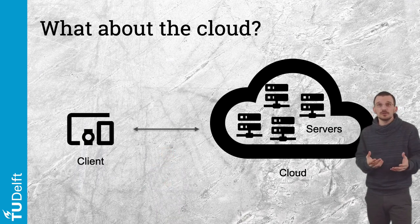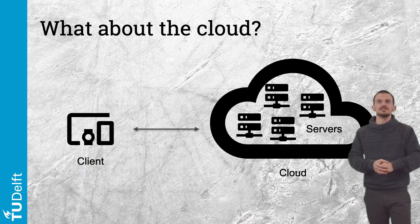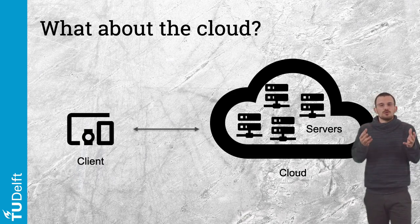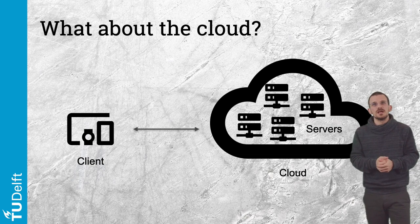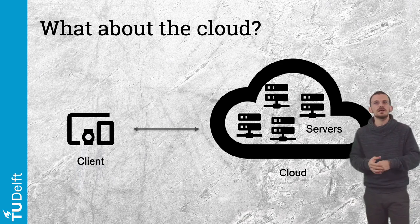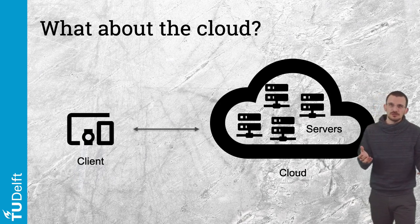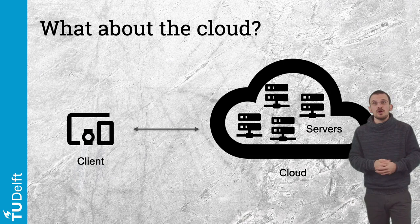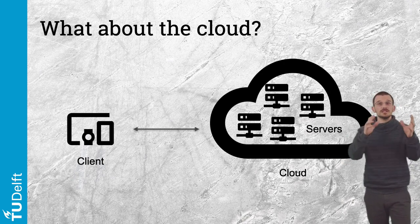These services require many different computers and capabilities distributed across the world, working together. However, YouTube or Siri users always request the same service. The cloud is another abstraction to hide the many different servers working together behind the scenes to deliver a service over the network — whether this service is provided by computers in a data center or by a small mini computer is not relevant to the user. This is the cloud.